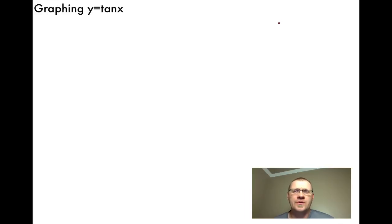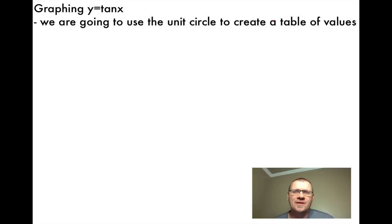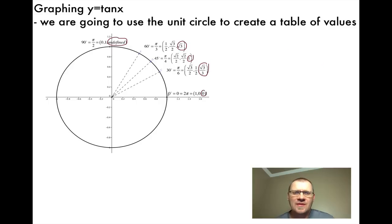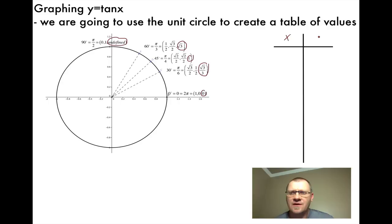We're going to be graphing y equals tan x, and we're going to do that the same way we did last time with sine and cosine — by using the unit circle to create a table of values. Here's our unit circle, and now we're looking at tan specifically, so we're going to be looking at the third coordinate on each of these points. In our table of values, x is just our angle, because we're talking about tan of x.